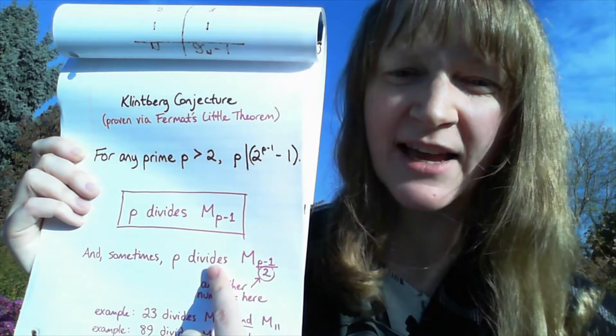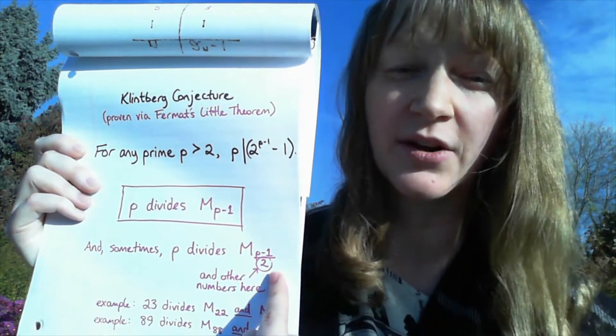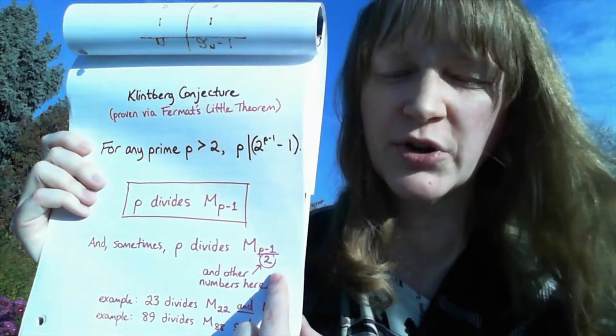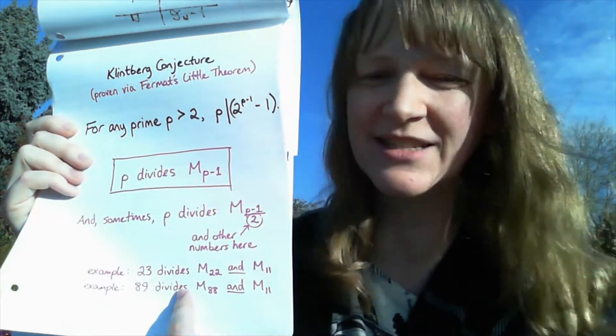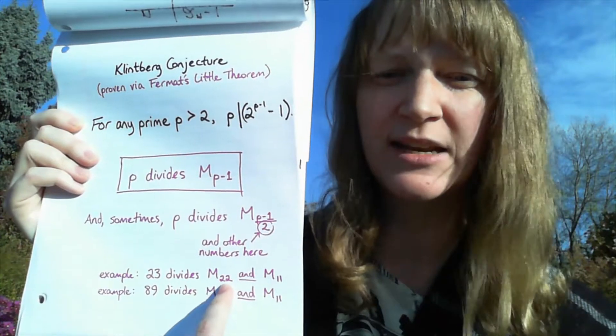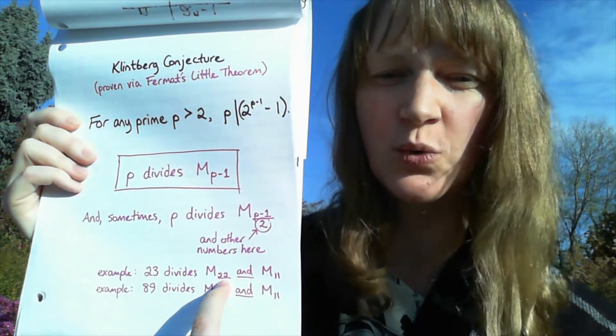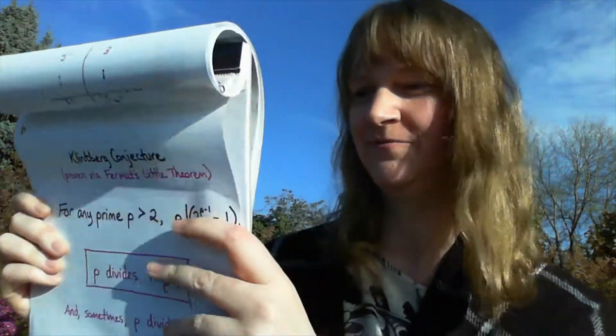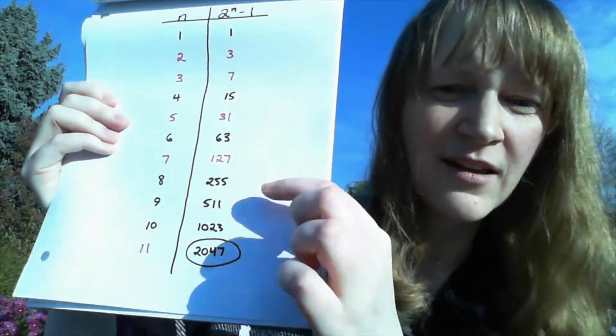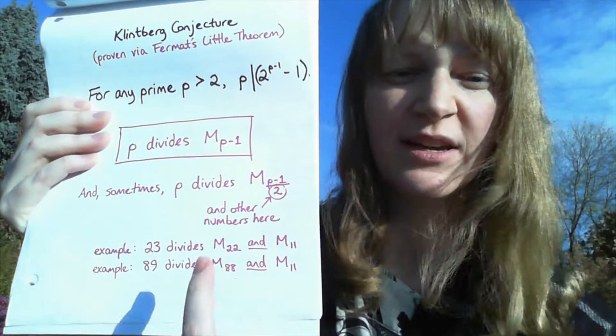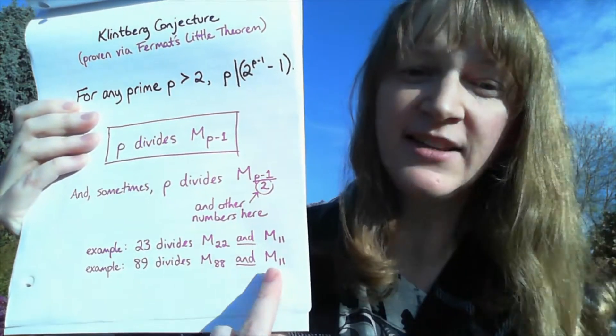Sometimes p also divides other Mersenne numbers that are smaller and this seems to play a part. Sometimes there are other numbers here as well, and just here are some quick examples to see how this plays out. 23 divides the Mersenne number where the exponent is 22. It also divides the Mersenne number where the exponent is 11. That infamous 11. And then likewise 89 divides the Mersenne number where the exponent is 88. It also divides M11.